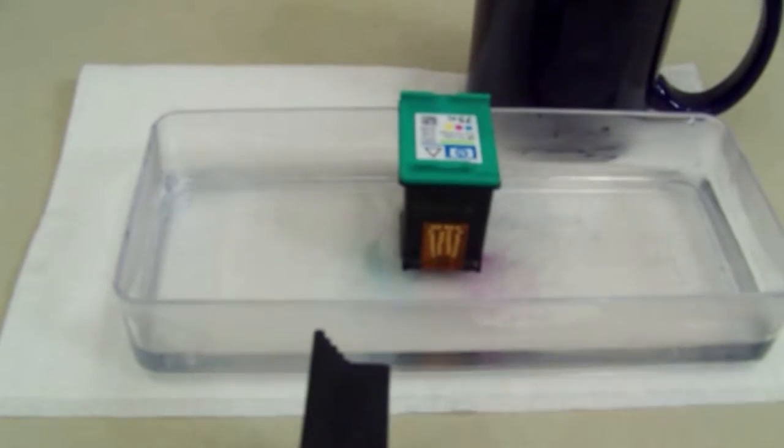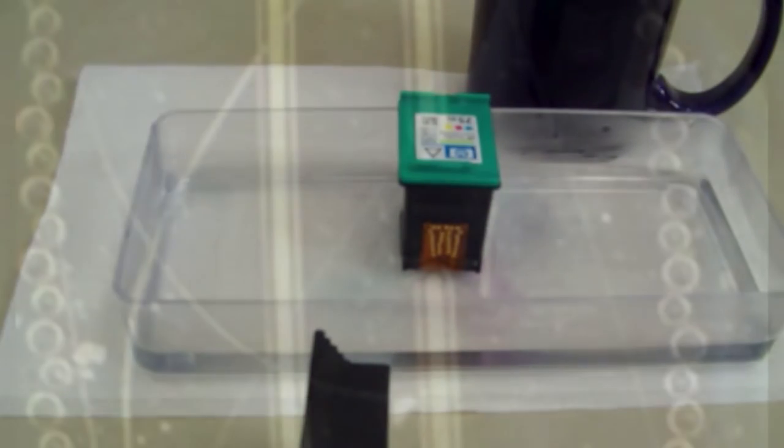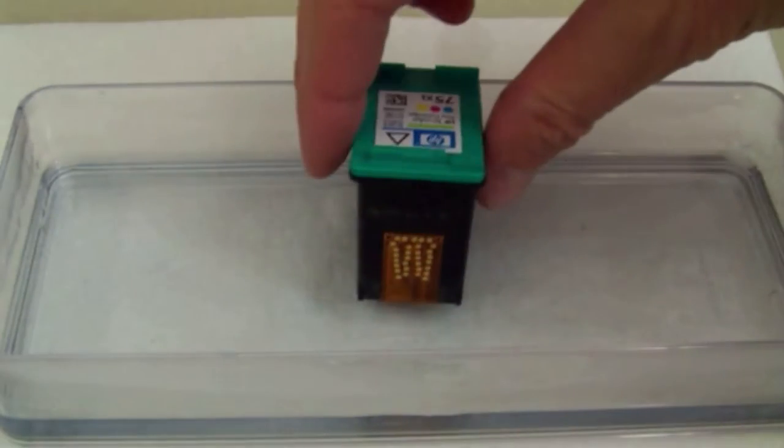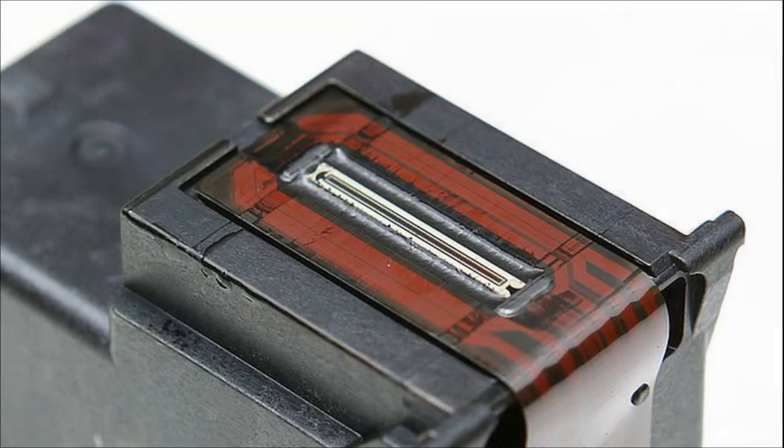Place both the color and black cartridge into the container for 5 minutes to help loosen up the dried ink. The hot water will help loosen up the dried ink which formed inside the very small printhead nozzle holes.